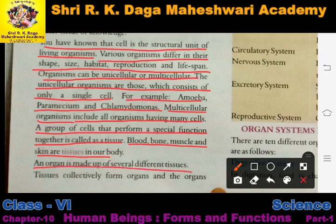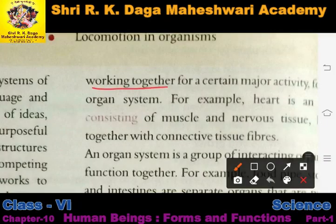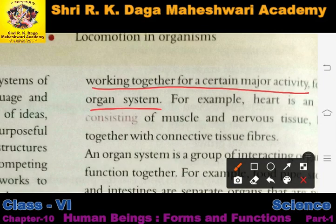An organ is made up of several different tissues. Many cells make up tissue, and many tissues make up an organ. Tissues collectively form organs, and the organs working together for a certain major activity form an organ system. So: cells make tissue, tissues make organ, and many organs make an organ system.